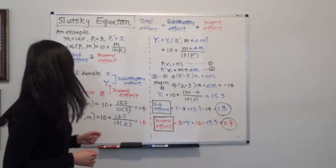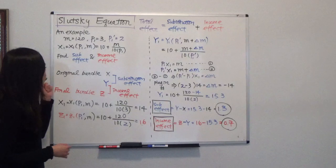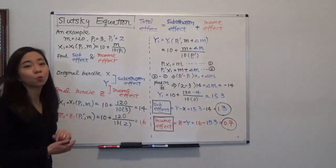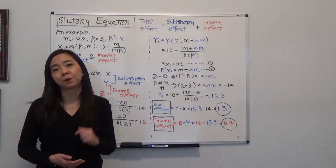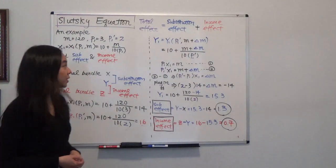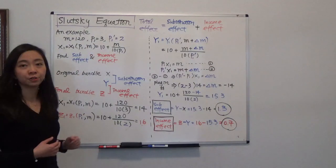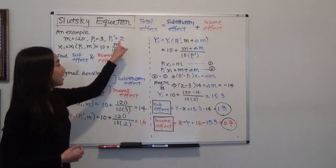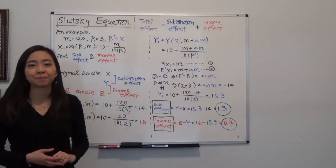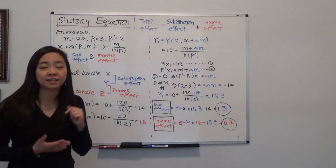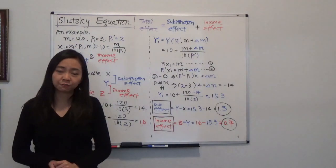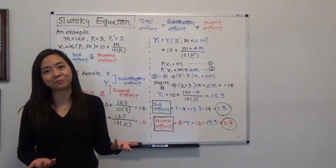Here is the example: given a budget of $120, suppose the price of milk has gone down from $3 to $2 per gallon. What is the substitution effect and income effect?